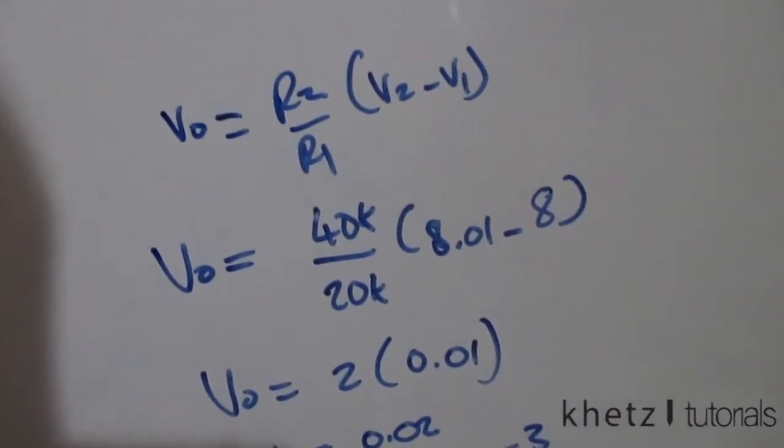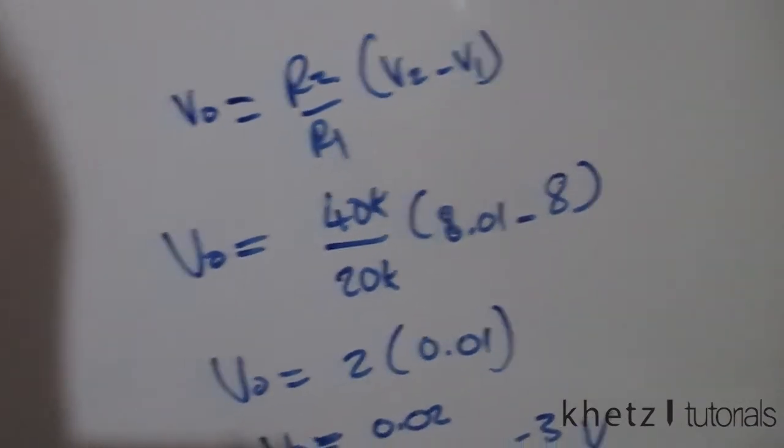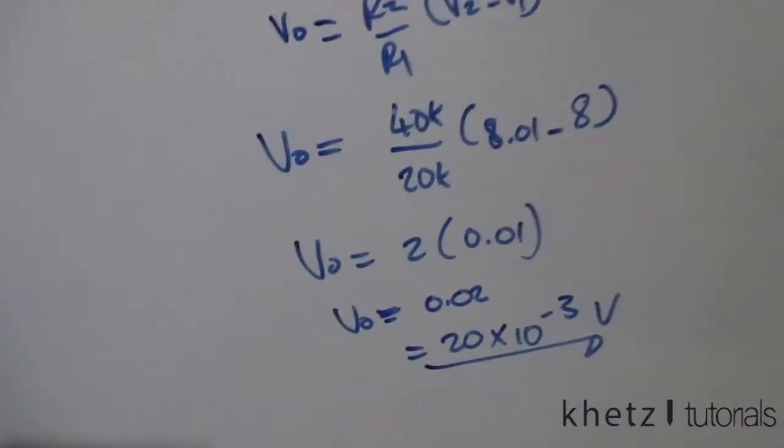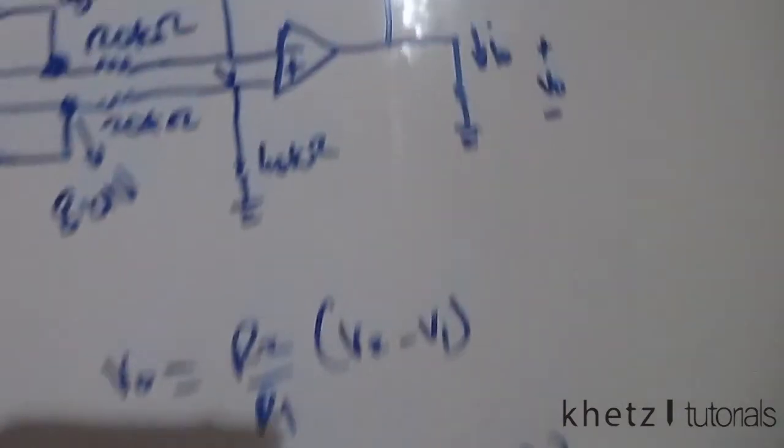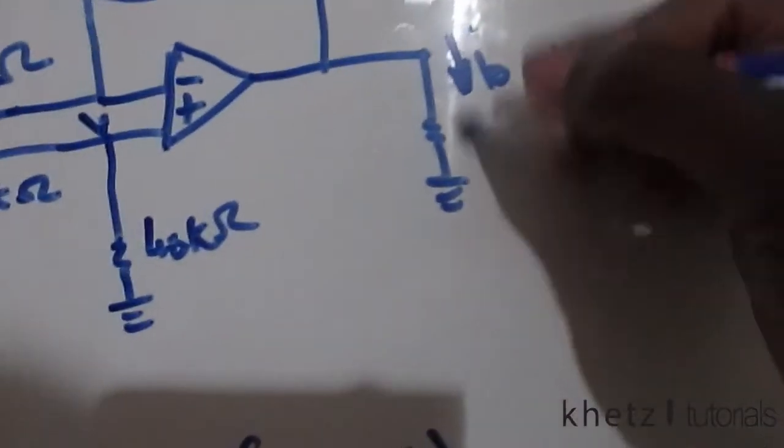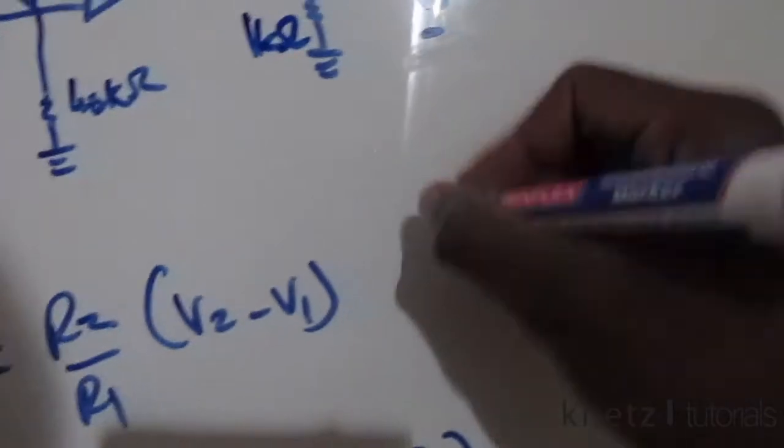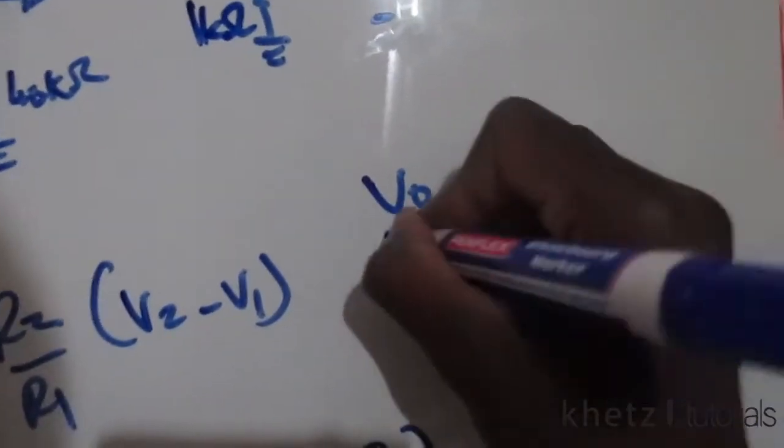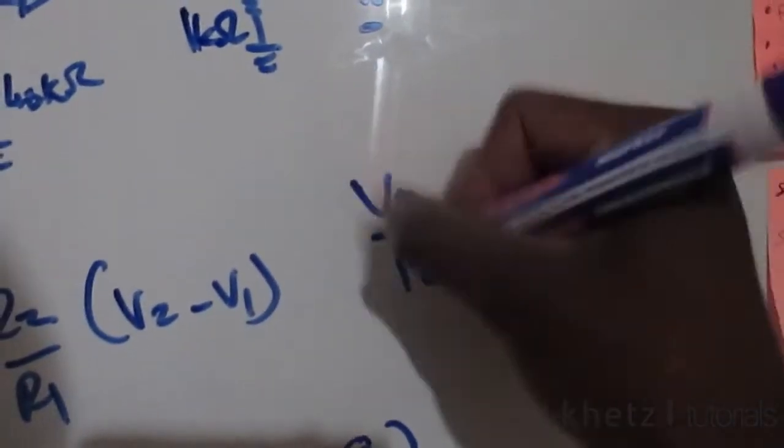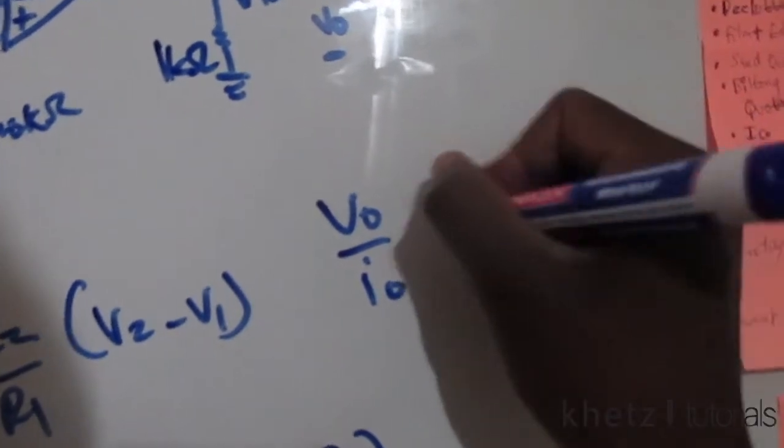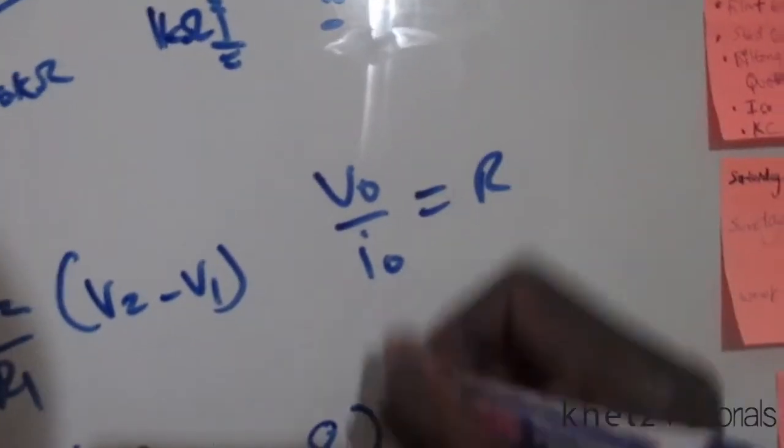But the question actually asks us to find i_o, and i_o is indicated across this resistor value of 1k ohms. So using Ohm's law, Vo divided by i_o should give you R.